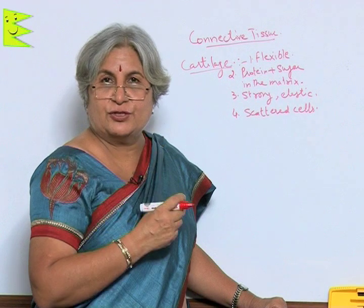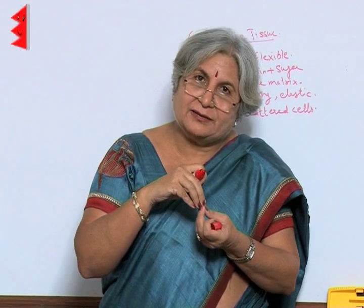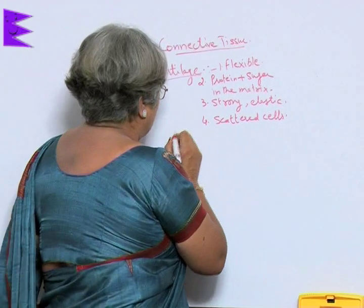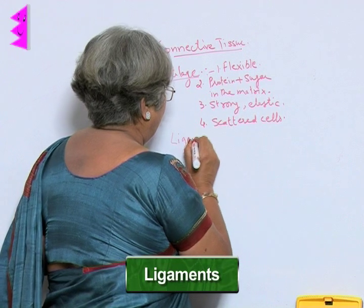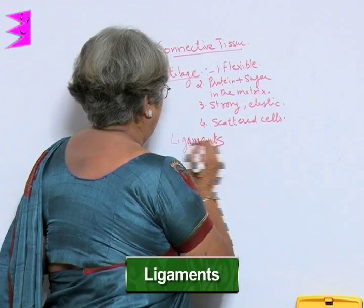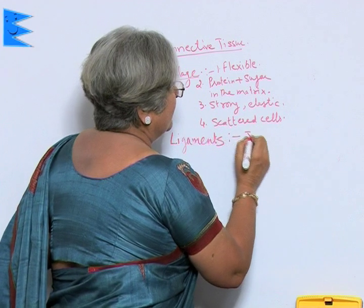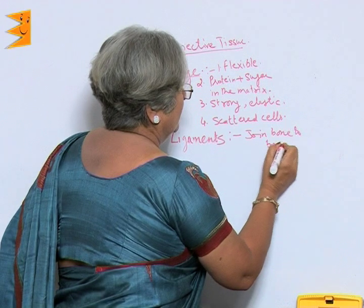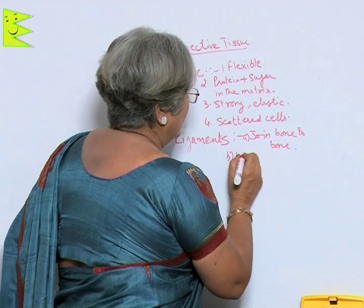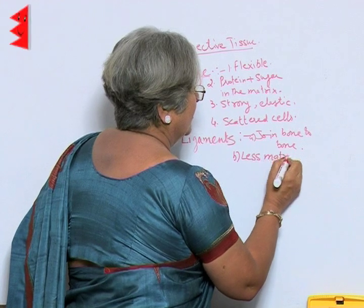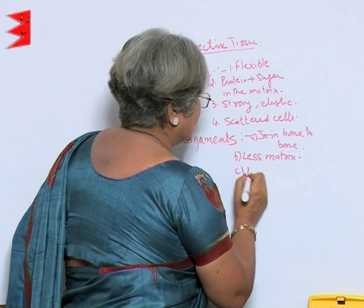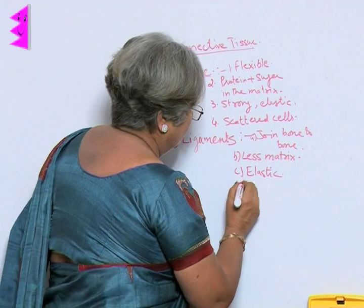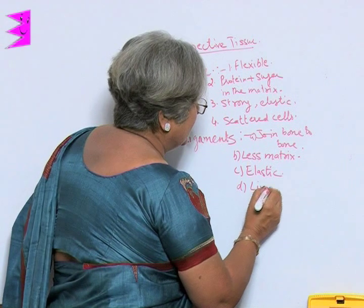How are two bones joined together? The connection is provided by ligaments. Ligaments join bone to bone. They have less matrix, they are elastic, but they have limited strength.